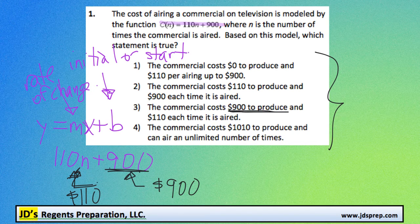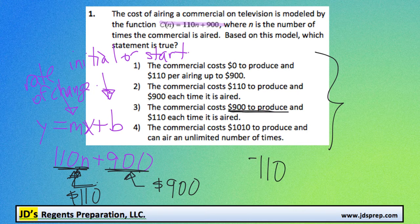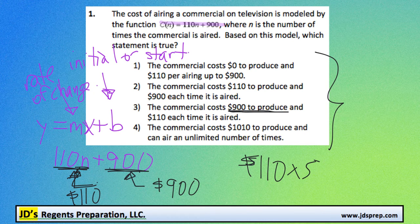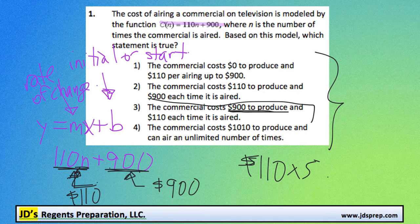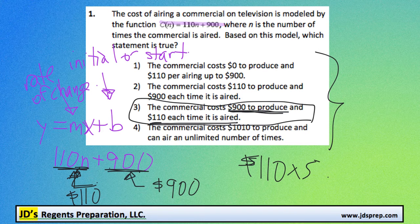And then for every time they air it, they're going to spend $110. For example, if they had to air the commercial five times, they would do $110 times five. So it makes sense that option number three is the correct answer. It's costing $900 to make and plus $110 every time it's aired.